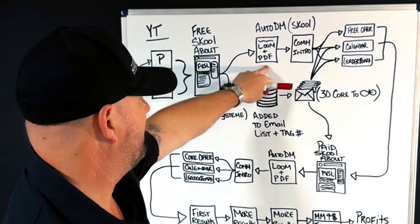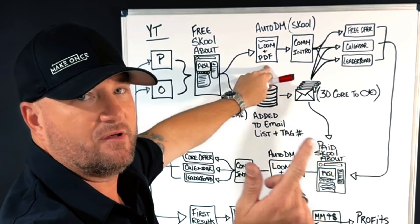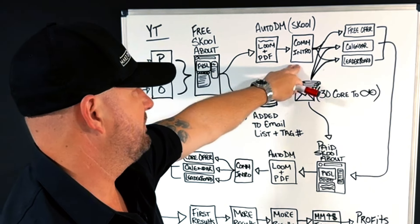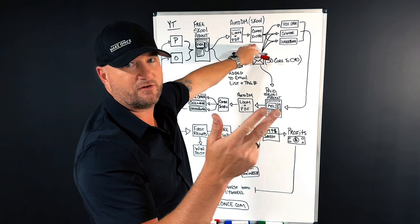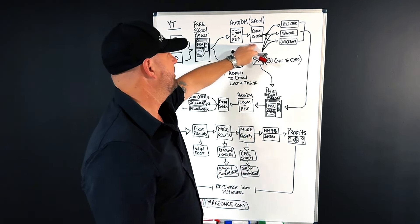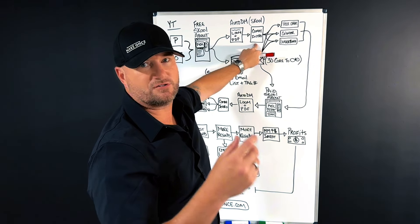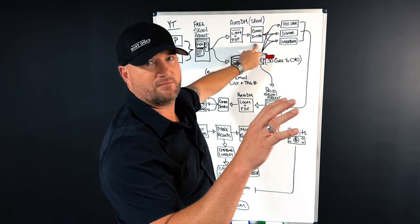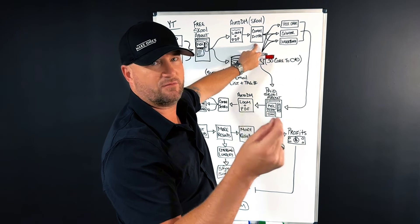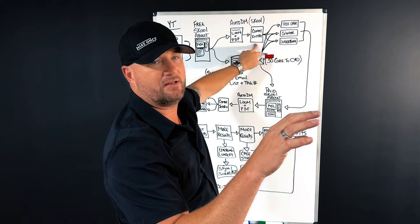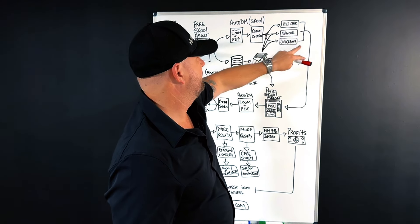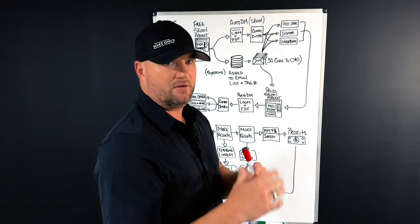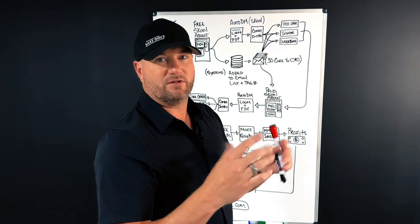When they come in, they get an auto direct message that welcomes and onboards them, shows them how the free School works. They introduce themselves into the community so I can understand why they're there, what their problem is, what they're trying to accomplish — without those things I can't help them very well. By posting, they also earn points. The point system in School means anytime somebody likes your post you earn points. I've set the calendar, leaderboards, and free offers to Level One — which just requires making a post and having someone like it.